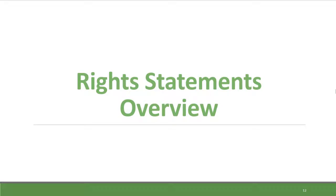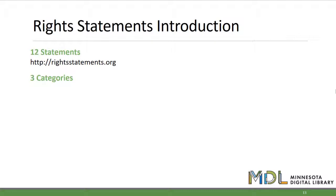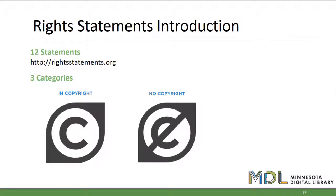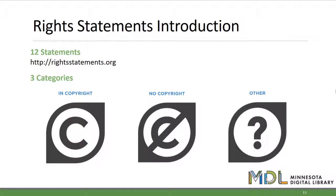I'm Sarah Ring and I'll be giving a rights statements overview. This is a very high-level overview of the rights statements, and examples of each will be given in the next recording and at future training that we offer. As mentioned earlier, there are 12 rights statements to choose from. They are intended to give users easy-to-understand information about copyright and reuse of digital objects. The rights statements should only be applied after the copyright status of a work has been established. The statements are organized into three categories on the website: in copyright — statements for works that are in copyright; no copyright — statements for works that are not in copyright; and other — statements for works where the copyright status is unclear.